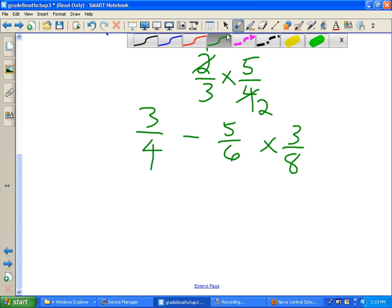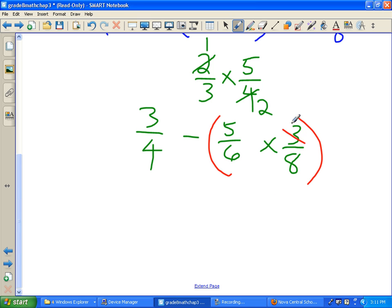Now we have the multiplication to do next, because multiplication comes before subtraction. First of all, when we multiply, we can cross simplify a couple of them. 3 goes into 3 once, and 3 goes into 6 twice. So 1 times 5 on the top is 5, and 2 times 8 on the bottom is 16.